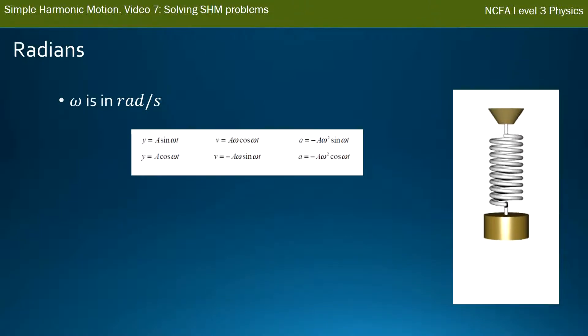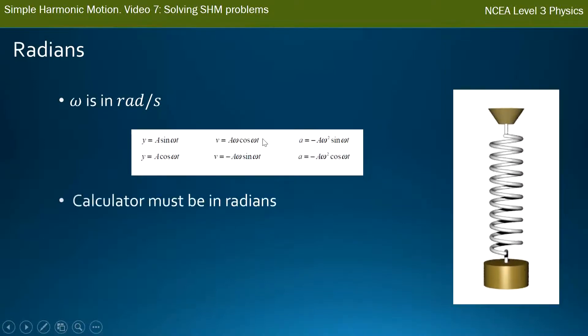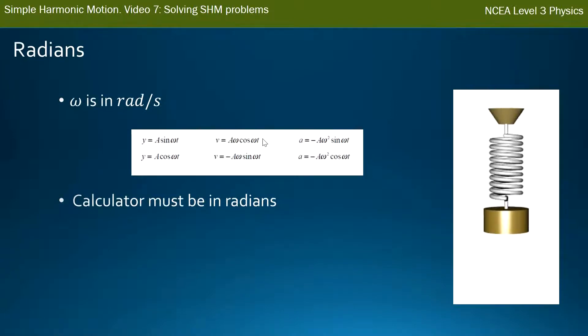You see the first equation there, y equals A sine omega t, and then we've got v equals A omega cos omega t. Because there's an omega in every single one of these sines or cosines, your calculator needs to be set up to do its calculation in radians. Otherwise it'll look up the table for values in degrees and you'll get a completely wrong answer.